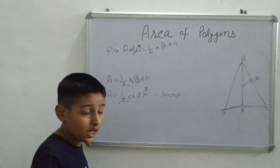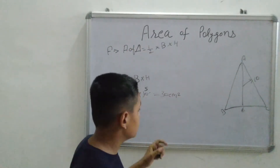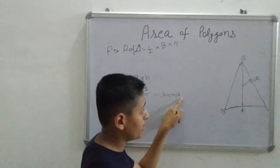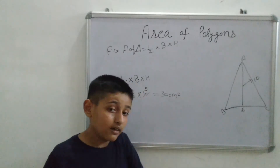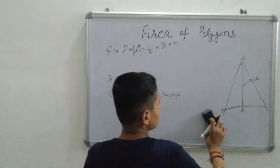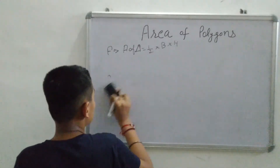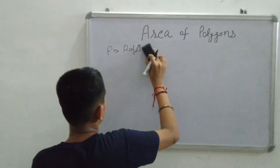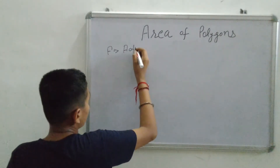The area of a triangle is 30 centimeter square. This is how we calculate the area of a triangle. Our next topic is the square.